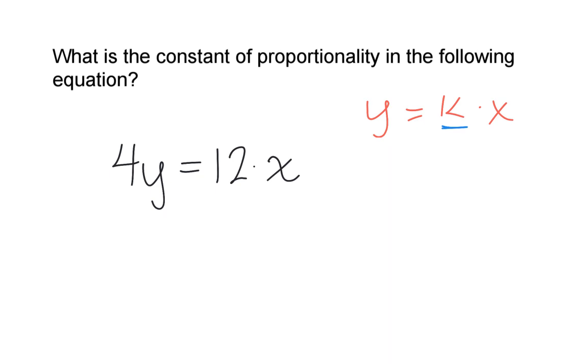We need to solve for y. So 4 times y equals 12 times x. To solve for y, we need the inverse operation. What is the opposite of multiplying by 4? We would divide both sides of the equation by 4.